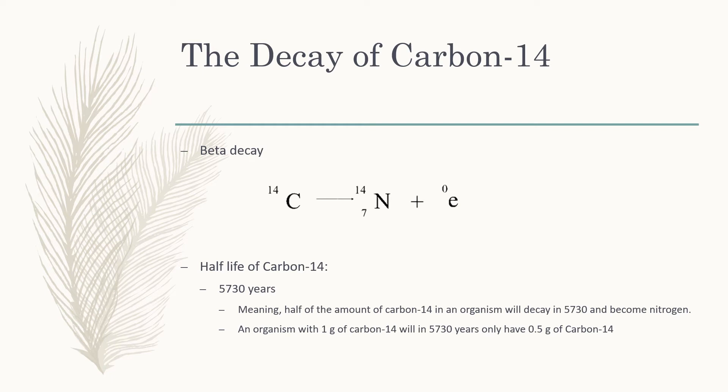For example, if we had one gram of carbon-14 in our system, in 5,730 years it would approximately have only 0.5 grams remaining — it could be more or less, because it is only an approximation.